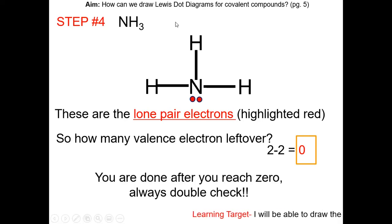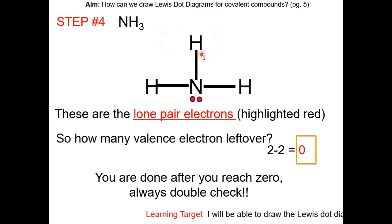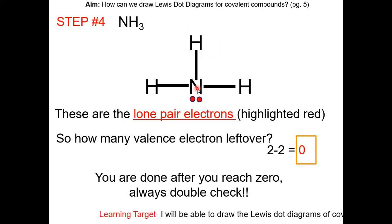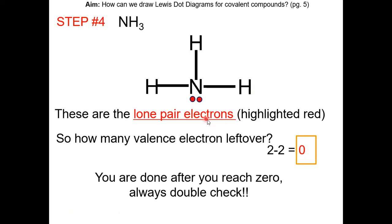Now let's check our work. Each hydrogen has fulfilled the octet rule. Nitrogen has three bonds (six electrons) and one lone pair, so nitrogen has fulfilled the octet rule. According to the guidelines, this is correct: nitrogen has three bonds and each hydrogen has one bond.